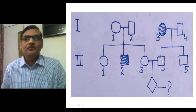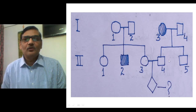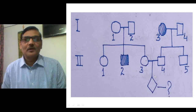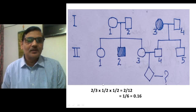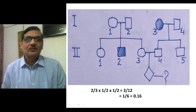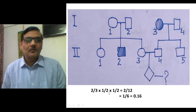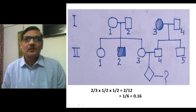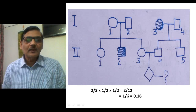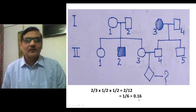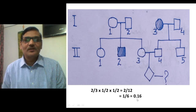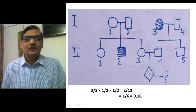Since II-4 shows normal features, his genotype is Aa — he is a definite carrier. The chance that he passes the recessive allele to the next generation is 1/2. So the overall calculation is: 2/3 (chance II-3 is carrier) × 1/2 (II-3 passes 'a') × 1/2 (II-4 passes 'a') = 2/12 = 1/6. The final figure is approximately 0.16, meaning a 16% chance that the third-generation child will be a sufferer.